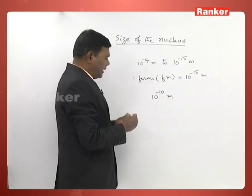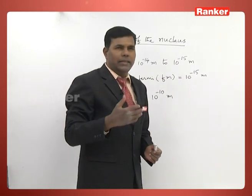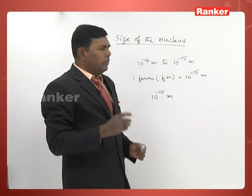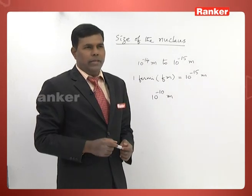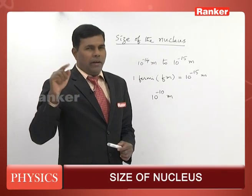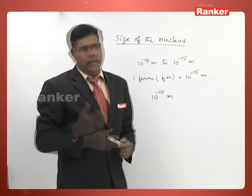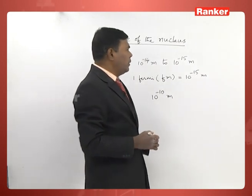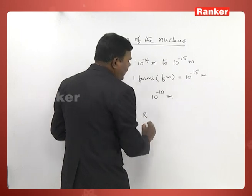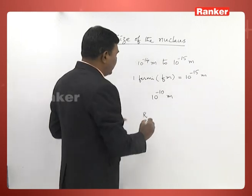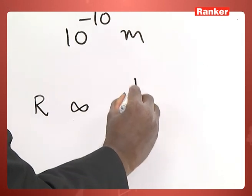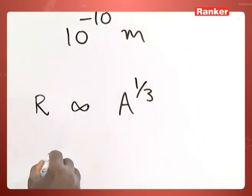You can see there is a difference of 10 to the power 5 between the atom and nuclear size. Generally, the radius of the nucleus is directly proportional to A to the power 1 by 3, where A is the mass number of the nucleus. If you take R as the radius of the nucleus, then R is directly proportional to A to the power 1 by 3. Here A stands for mass number.